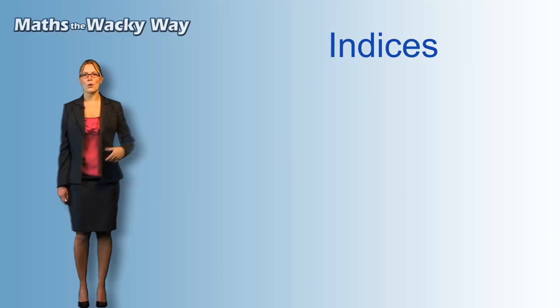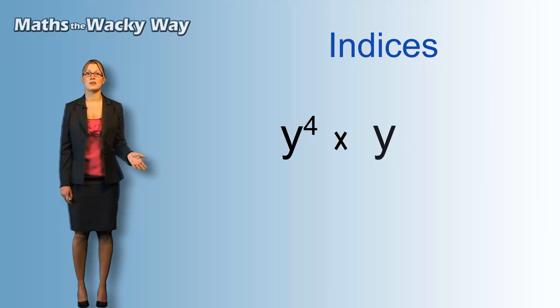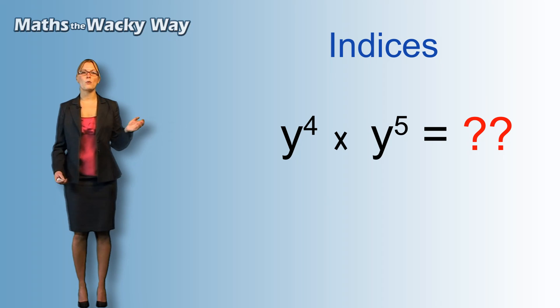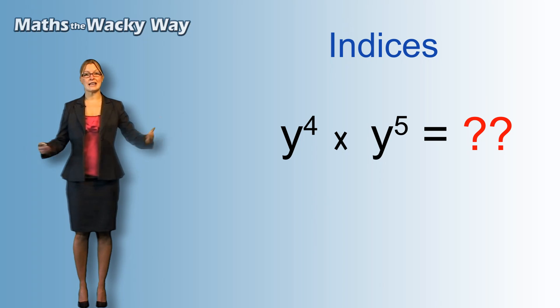Let's take, for example, y to the power of 4 times y to the power of 5. Now, because they're both y's, what we're able to do is actually simplify it together. If they were different, if we had a y and an x, we wouldn't be able to simplify them. Because they're two y's, we can use a rule which will just bring them together nicely.